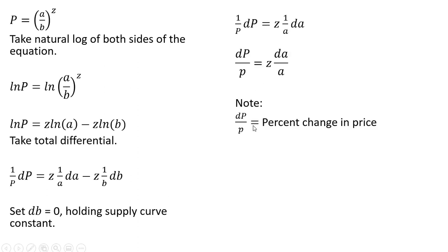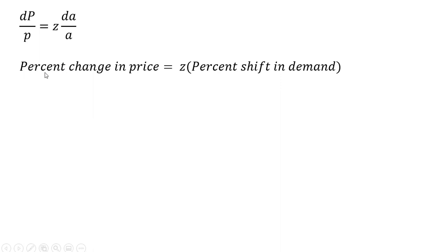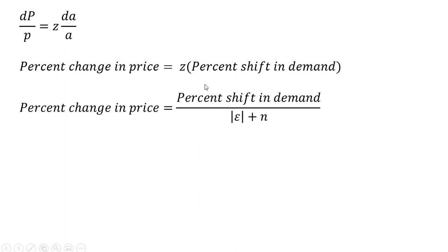Note that this term reflects the percentage change in price, and this term reflects the percentage shift in the demand curve. Making our substitutions, the percent change in price equals z multiplied by the percent shift in the demand curve, where z is 1 over the elasticity of demand plus the elasticity of supply, with the elasticity of demand entered in absolute value. Okay, that's it.